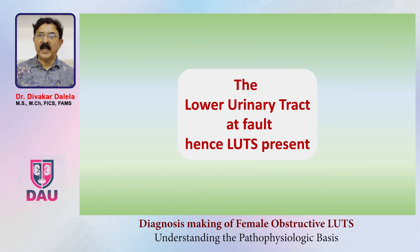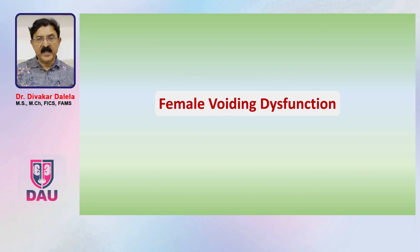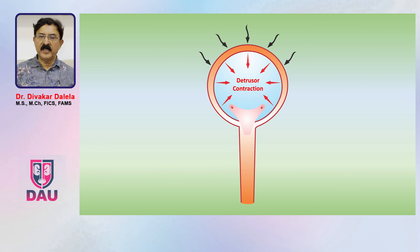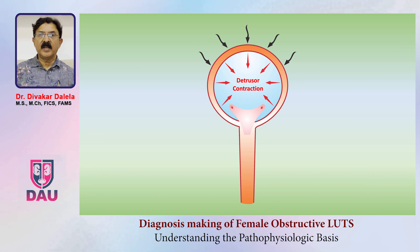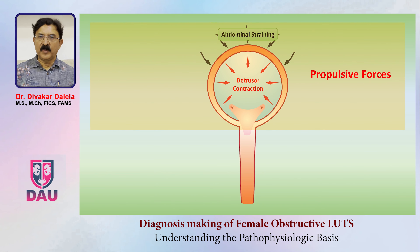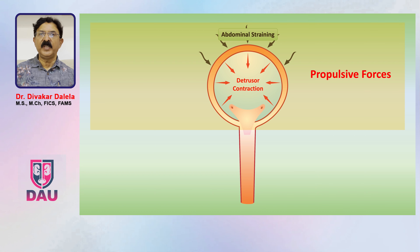The first responsibility as a urologist is to rule out that there is no disease elsewhere masquerading through the lower urinary tract. Having done so, you move to the group where the lower urinary tract is at fault — female voiding dysfunction. Look at this schematic diagram: there is a bladder in the center and a urethral tube. The bladder muscles generate a contraction force called detrusor contraction, and abdominal straining can augment this. Both these forces are called propulsive forces because they propel urine out through the urethral tube.